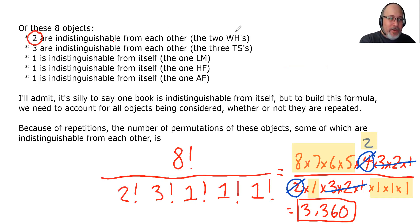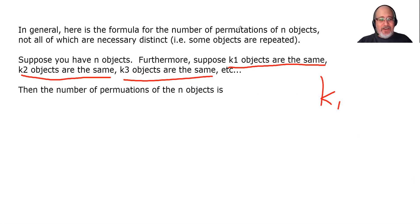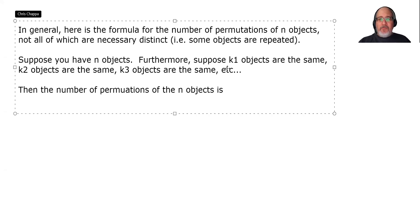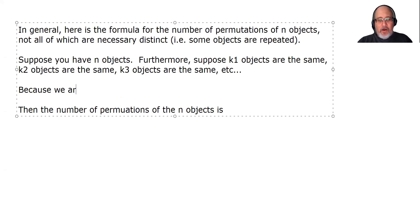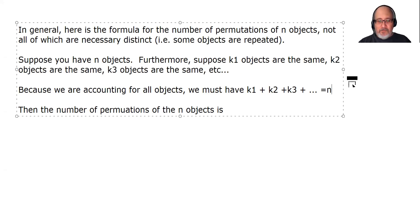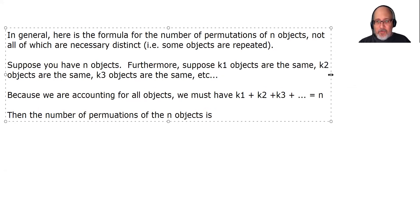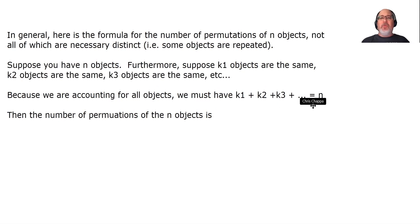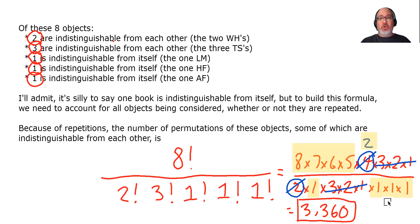In the example that we did previously, this is K1. This is K2. This is K3. So there's five Ks here. Because we are accounting for all objects, we must have K1 plus K2 plus K3 plus however many things we're counting equals n. So, for example, back over here, 2 plus 3 plus 1 plus 1 plus 1 is 8, meaning that we are accounting for all objects, whether or not they're repeated throughout our collection.